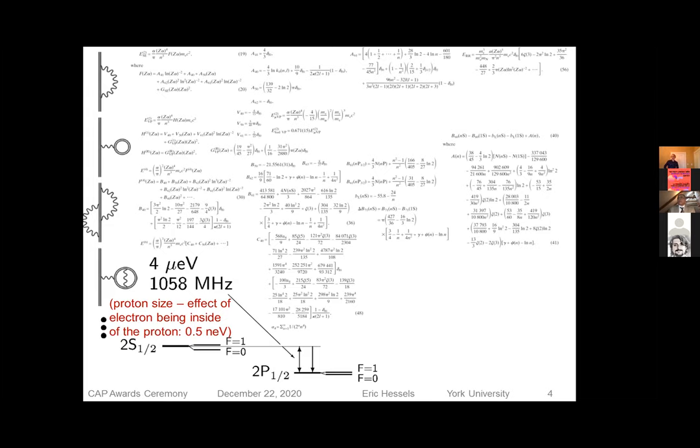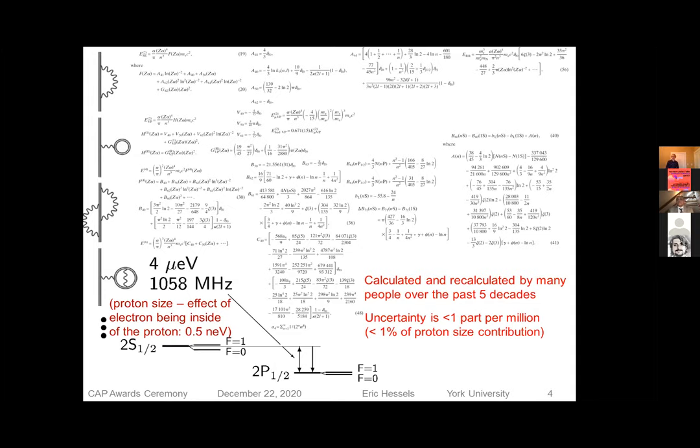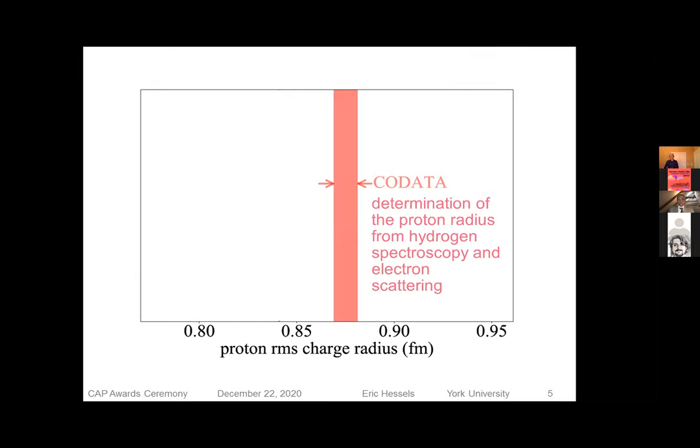And that contribution is just one half of a nano EV, a small portion of the lamb shift. The QED part has been calculated and here's the result. This is a lot of work. The last five decades have gone into calculating this work. But it's been calculated to an accuracy of a part per million. And everyone believes that calculation at a part per million uncertainty. And that allows one to determine the proton size to 1% accuracy. And this theory has now been stable for two decades. And as I say, it's considered very reliable.